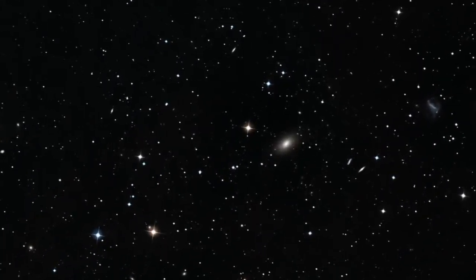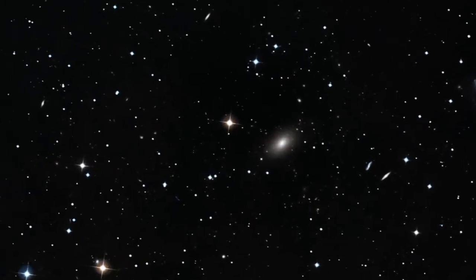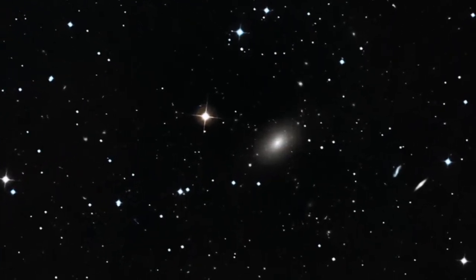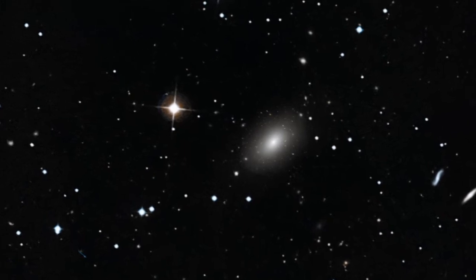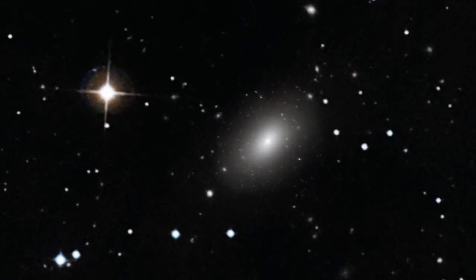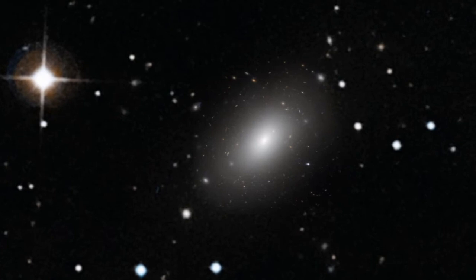But closer up, we see that NGC 1132 is rather special. It's humongous. Many times larger than the average elliptical galaxy, it belongs to a category of galaxies called giant ellipticals.